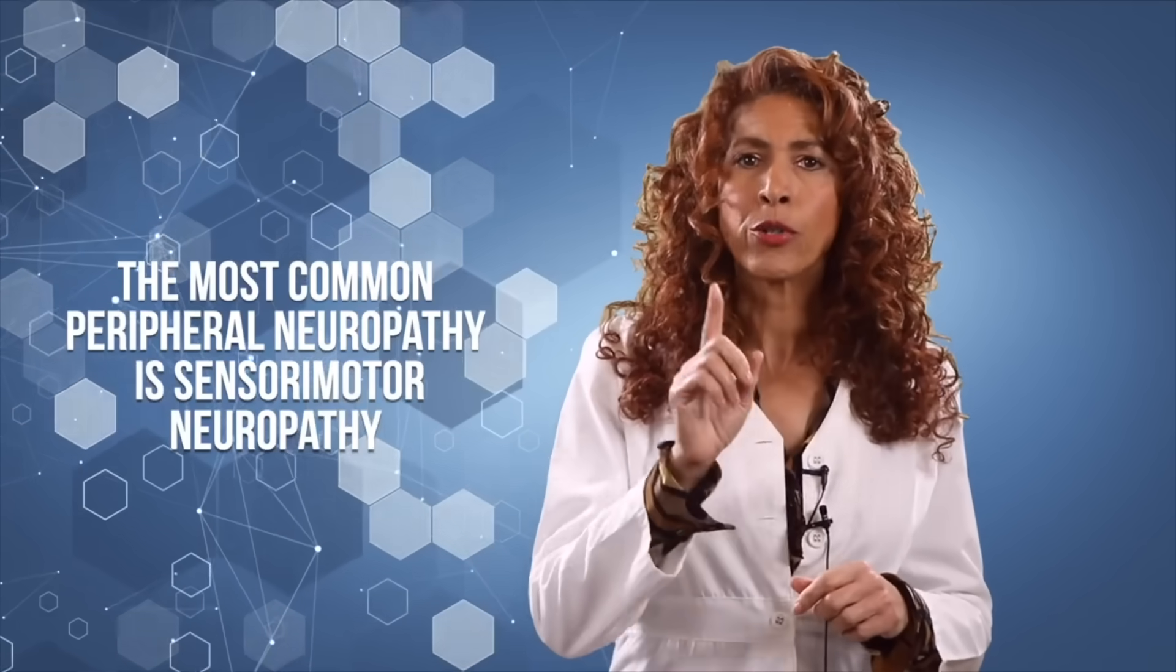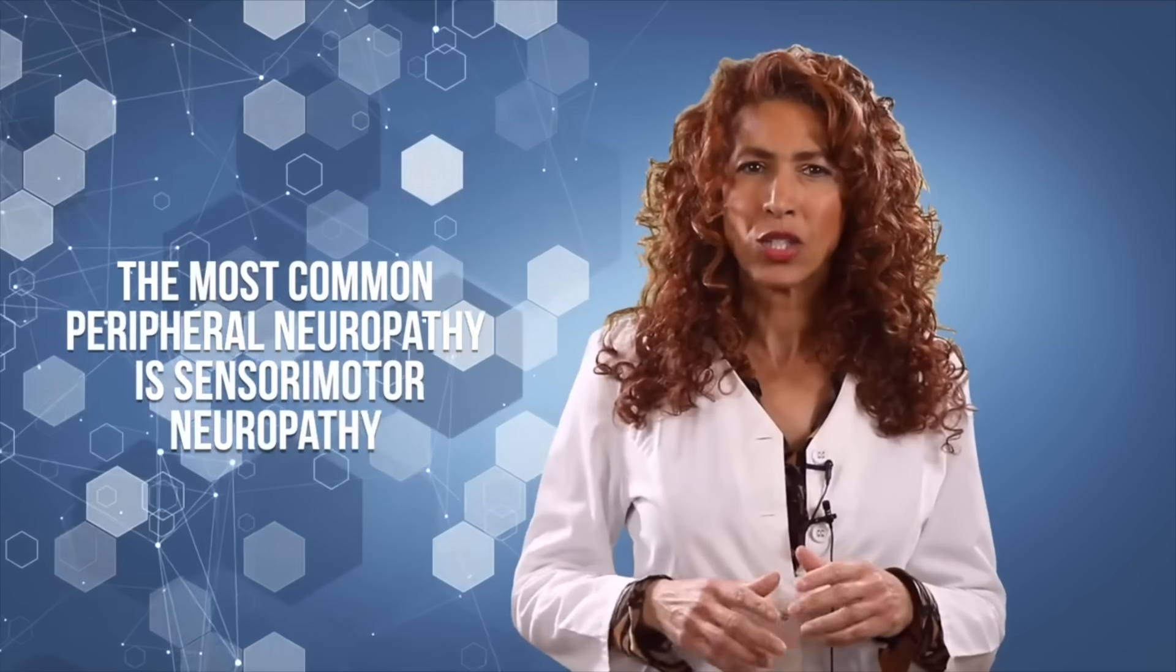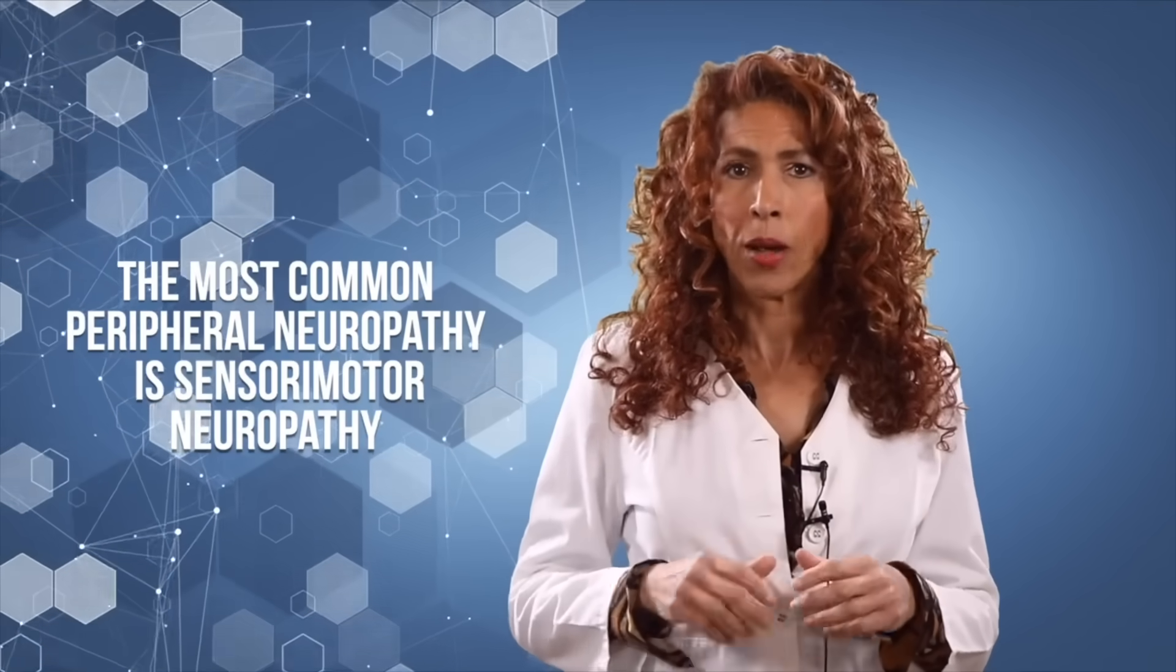With peripheral neuropathy, I mentioned that the nerve damage can affect the motor, sensory, or autonomic nerves. But the most common nerve damage we see affects both the motor and sensory nerves, and that's why it's called sensory motor neuropathy.